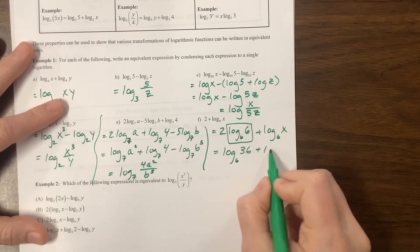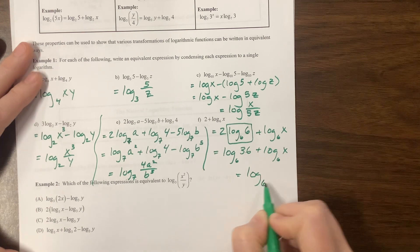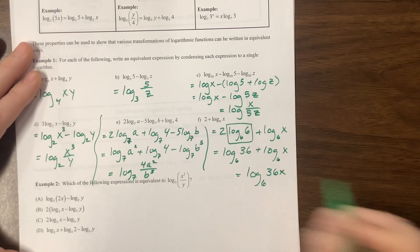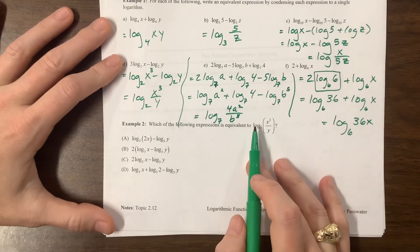So this becomes log base 6 of 36, 6 squared is 36, plus log base 6 of x. Our final answer becomes log base 6 of 36x. You can put the parentheses, but you don't have to.